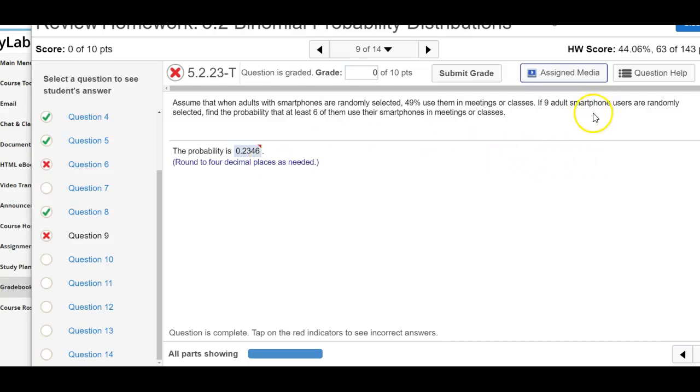So I want to go over how to use the calculator on this problem. The key here is find the probability that at least six of them use their smartphones in a meeting or class.